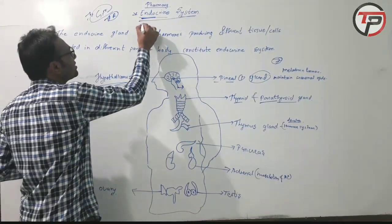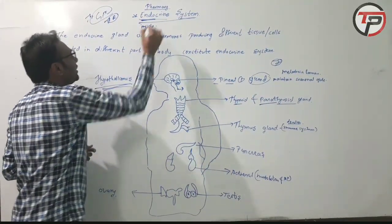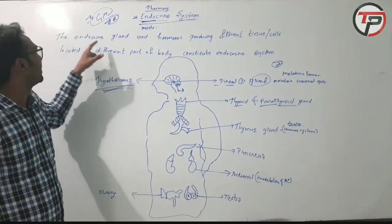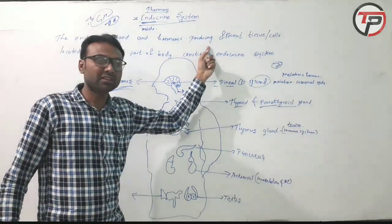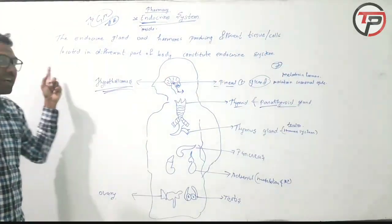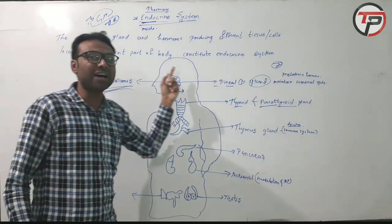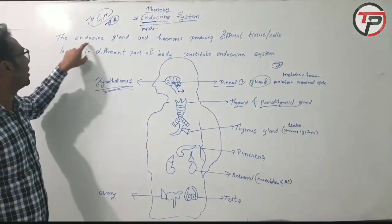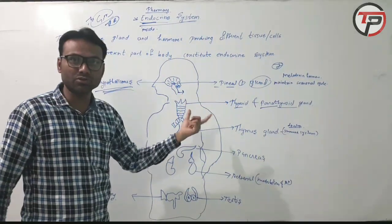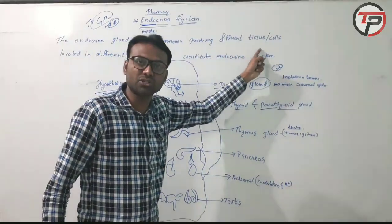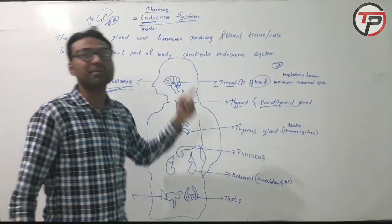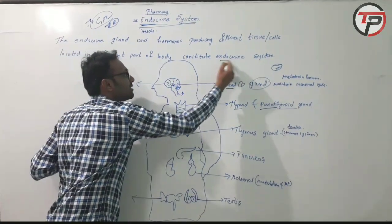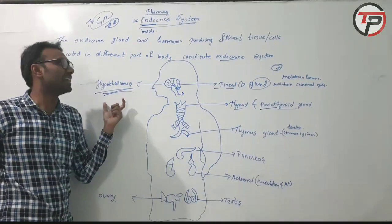Now we will see the definition of the endocrine system. Endocrine glands and hormone-producing different tissues and cells located in different parts of the body constitute the endocrine system. 'Endo' means inside — so the endocrine system refers to the systems working inside our body.